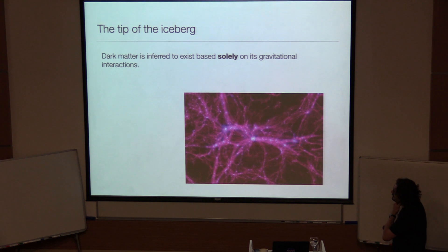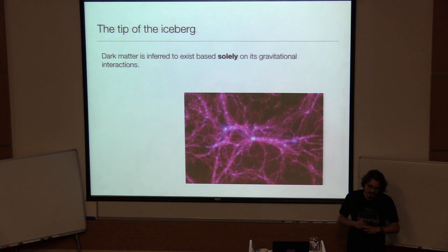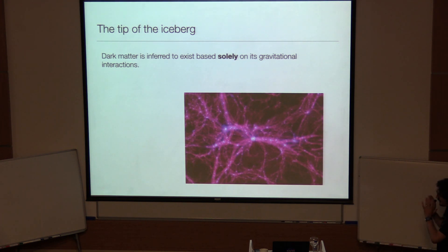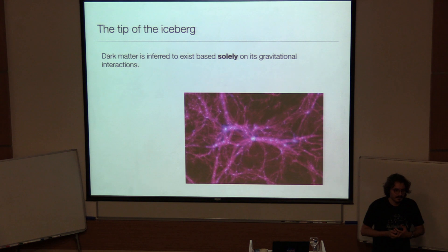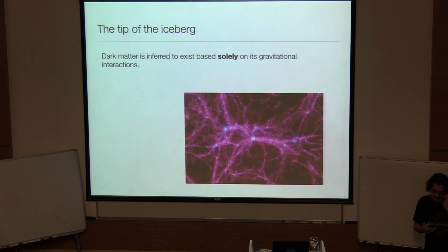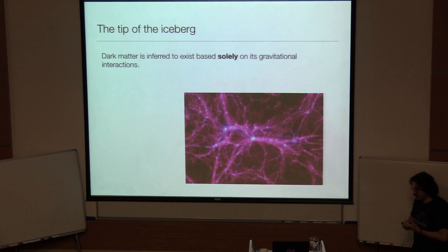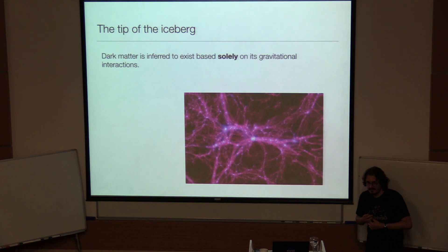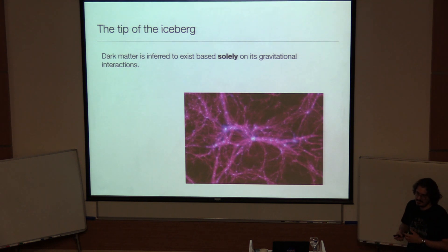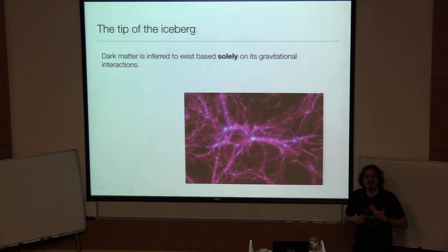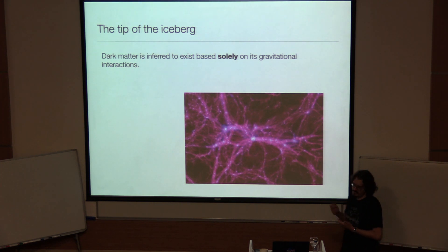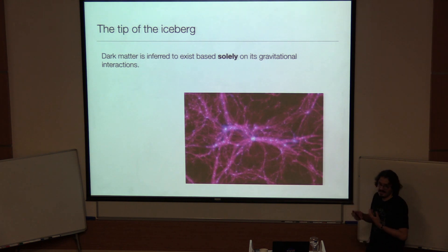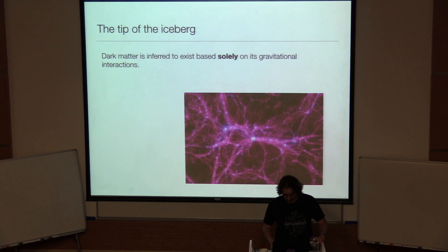Now I will briefly discuss the particle nature of dark matter without going into too much detail because Tracy is going to talk about this. I've only so far mentioned the gravitational interaction of dark matter — it's a hypothetical construct motivated by its gravitational interaction. There is so far no clear motivation outside this context from other interactions such as electromagnetism, weak interaction, or strong interaction. It is clear that dark matter shouldn't interact electromagnetically, but it could have very weak other interactions that we may not yet know.